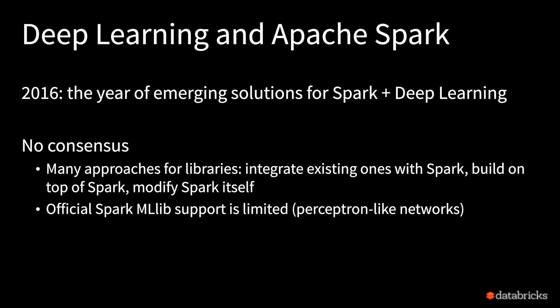If you look around the Spark ecosystem, there are a lot of approaches and libraries. Each of them has a different approach to integrating with Spark. Some try to integrate existing deep learning libraries with Spark; others are built from scratch on top of Spark; others try to modify Spark itself to run more efficiently. There are no clear consensus here. Furthermore, if you look at what is offered in MLlib — the standard machine learning offered with Spark — the support for deep learning and neural networks in general is very limited. All you have right now are perceptron-like networks and a few basic training techniques that really do not represent the state-of-the-art in deep learning.